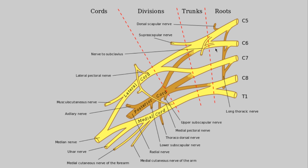Then we have trunks: superior, middle, and inferior. And then we have a gaggle of divisions that go either anteriorly or posteriorly, which turn into cords: lateral, posterior, and medial cord. With anything in the body, they named it for either its location or its function.